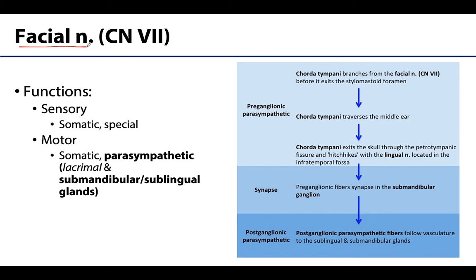The facial nerve is another cranial nerve like the glossopharyngeal that is fairly complex in regards to multiple functions. It is actually going to provide preganglionic parasympathetic fibers to two different types of glands — not just the submandibular and sublingual salivary glands, but also the lacrimal gland which produces tears. Our focus today will be on those salivary glands and we are going to go through the steps on this chart step by step.